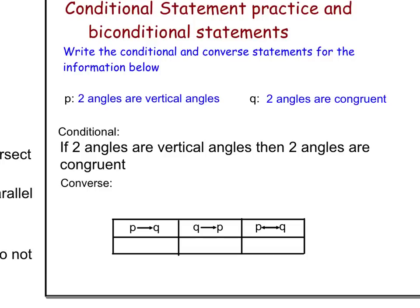So the conditional statement is if two angles are vertical angles, then two angles are congruent. And the truth value of that is true. It is true. If two angles are vertical, then they are also congruent.